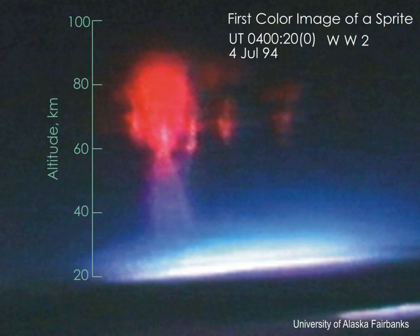Sprites were first documented photographically on July 6, 1989, when scientists from the University of Minnesota, using a low-light video camera, accidentally captured the first image of what would subsequently become known as a sprite. Several years after their discovery they were named sprites after their elusive nature. Since their 1989 discovery, sprites have been imaged from the ground, from aircraft and from space, and have become the subject of intensive investigations.